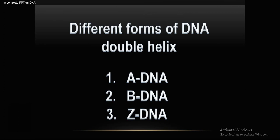There are three different forms of DNA double helix: A-DNA, B-DNA, and Z-DNA. Thank you, dear students.